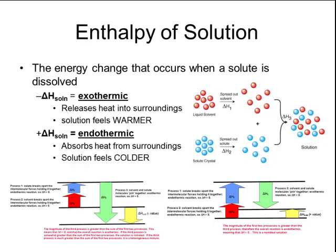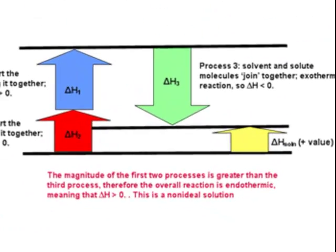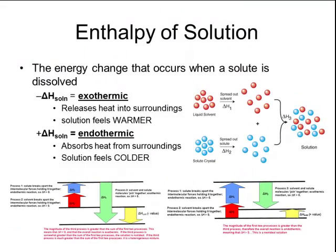The opposite is also true — the enthalpy of a solution can also be endothermic. These solutions absorb heat from their surroundings, causing the solution to feel colder after the solute has dissolved. The red and blue arrows represent the energy required to spread apart the solute and solvent particles, and the green arrow represents the energy released when those particles join together. In this case, the amount of energy released is not as much as the energy needed to separate the particles, so the overall process is endothermic. These enthalpy values will have a positive energy associated with them because heat is being added from the surroundings.